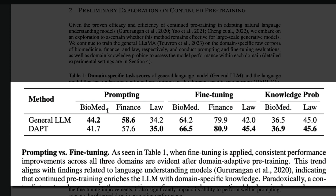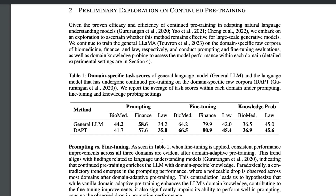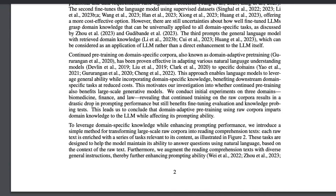The results show that for general prompting, the general LLM scores higher than the DAPT model in biomedical and finance domains, with only law showing a DAPT advantage. For fine-tuning and knowledge probing, the DAPT model performs better. This validates the authors' hypothesis that DAPT hurts general prompting ability.